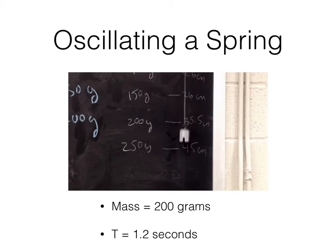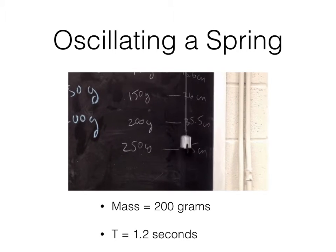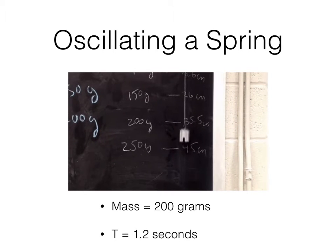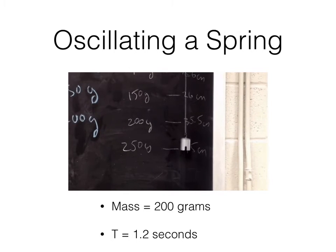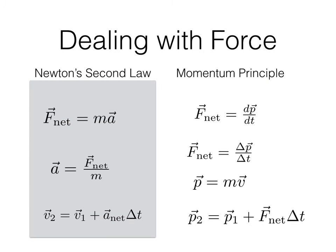This is a mass on a spring oscillating. You can see that we can get a relationship for the oscillation too. Again, you're going to do this experimentally. Okay, how do we model a mass on a spring? I'm going to show you two ways. I don't know what you cover in lecture class, so this is going to be both ways. Let's look at this first gray box — this is probably what you're going to do.